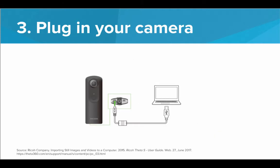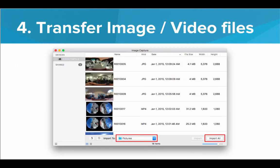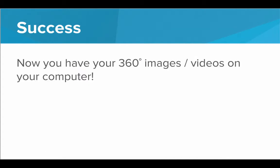Third, go ahead and plug in your camera — connect it to your computer either through USB or over Wi-Fi. Once connected, transfer the images from the camera to the computer. For Windows or Linux, plug your camera in and follow the onscreen instructions. For Mac OS, use the Photos app or the Image Capture app. I opened up the Image Capture app, saw my camera under the devices list, and simply chose to import all into my pictures folder. Success — we now have our 360 images on our computer.